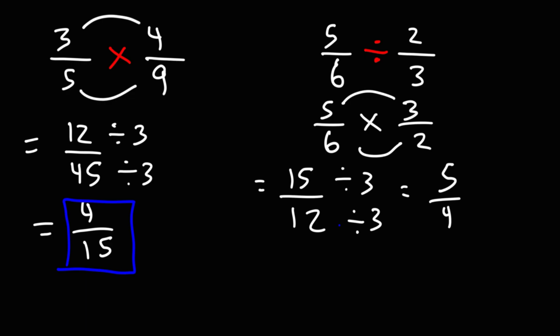So we get an improper fraction, 5 over 4. It's improper because the numerator has a greater value than the denominator.